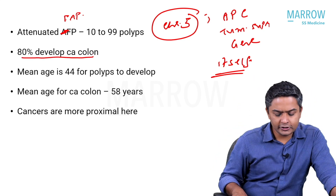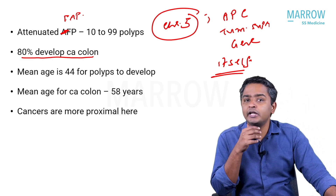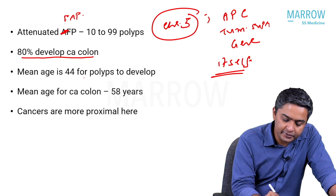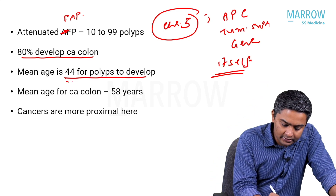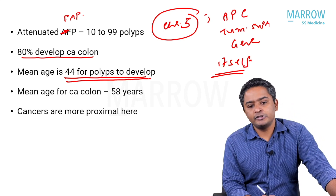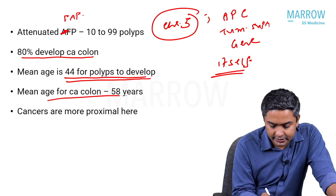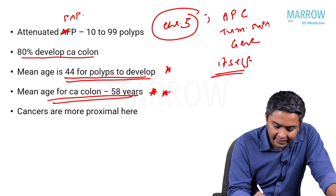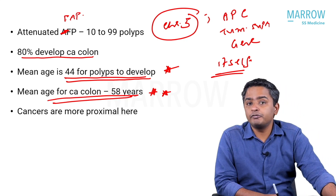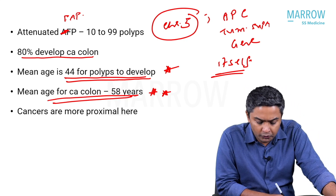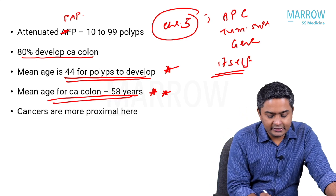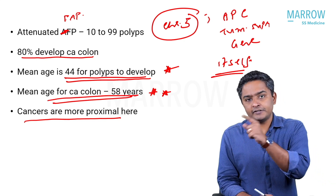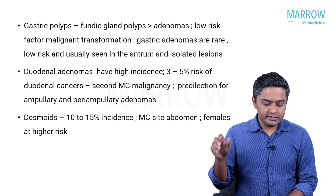The age of onset of polyps is a little later. For classic FAP, the average was 16 years. For attenuated FAP, the average age of polyp development is 44 years, and the average age for carcinoma colon to develop is 58 years. So there it was 16 and 39; here it is 44 and 58. Also, in attenuated FAP, cancers tend to occur more proximally, whereas classic FAP is more distal, on the left side of the colon.